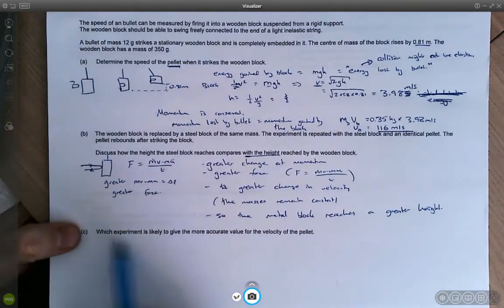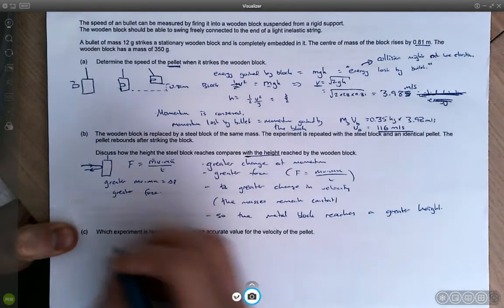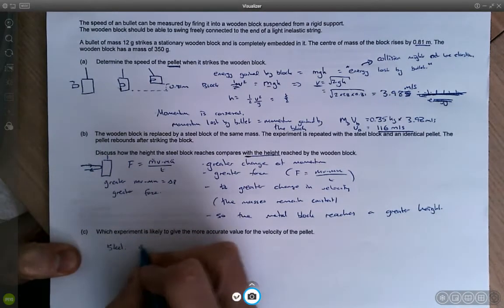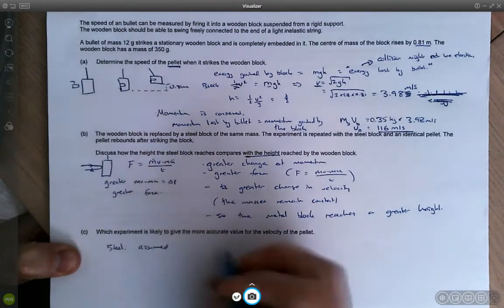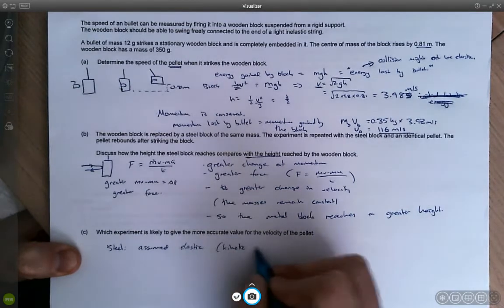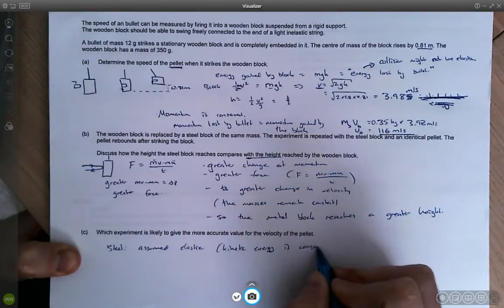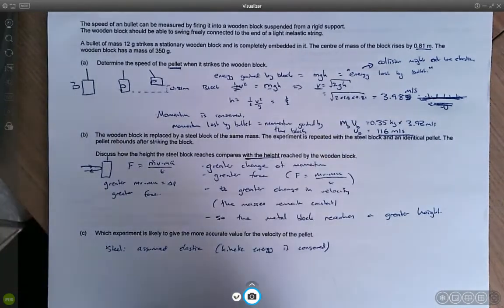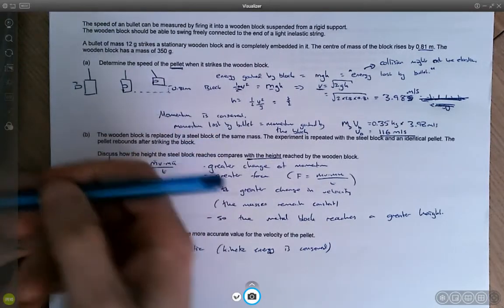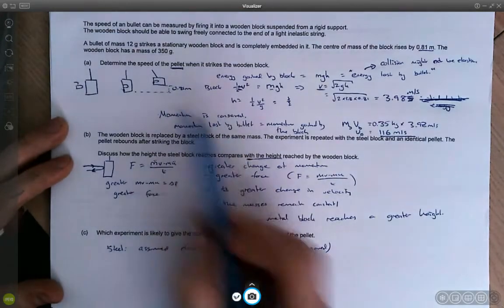Okay, part c, which experiment is likely to give the more accurate value for the velocity of the pellet. So what have we done in part b? So the steel one, we've actually assumed an elastic collision, we've assumed kinetic energy is conserved. Because we're kind of assuming that the rebound velocity is the same as the initial velocity, but we don't know if that's true.